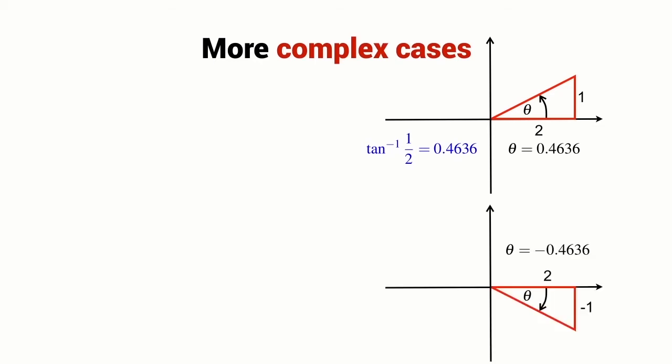Let's try for the case where the angle is negative. In this case, the width is 2 but the height is equal to minus 1. I can compute the arctangent of minus 1 divided by 2, and I get the result which is minus 0.4636, just as I would expect.